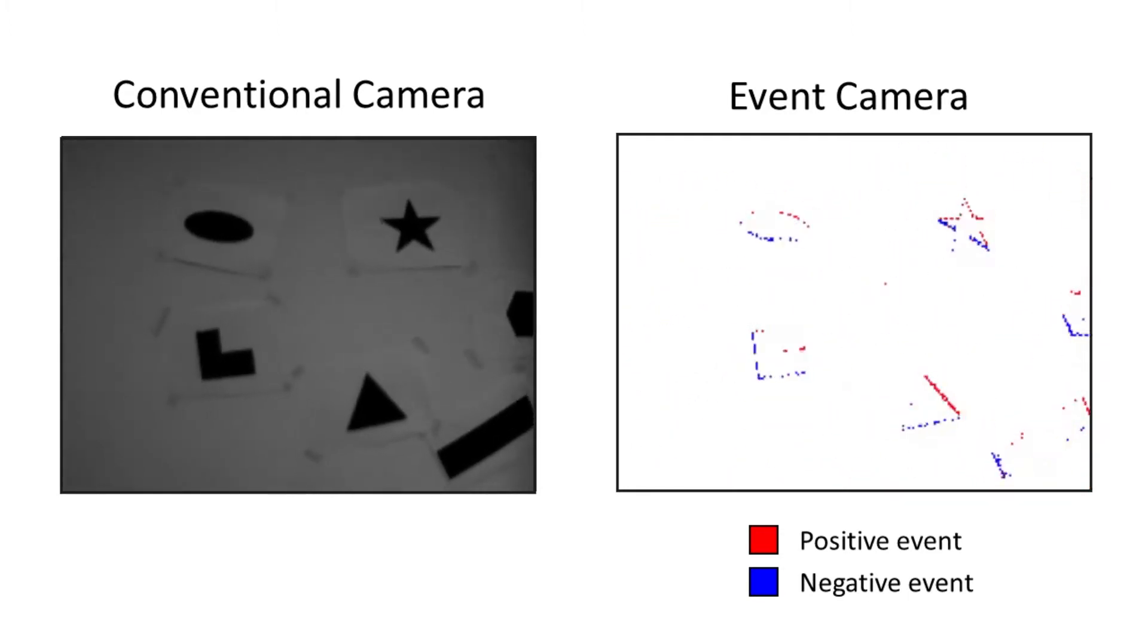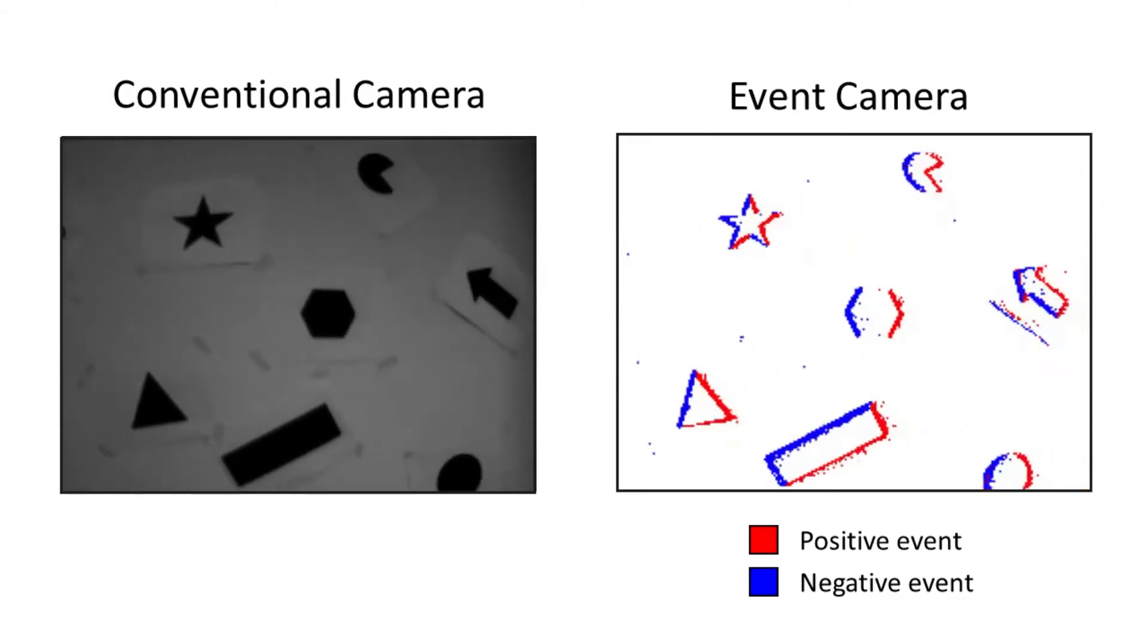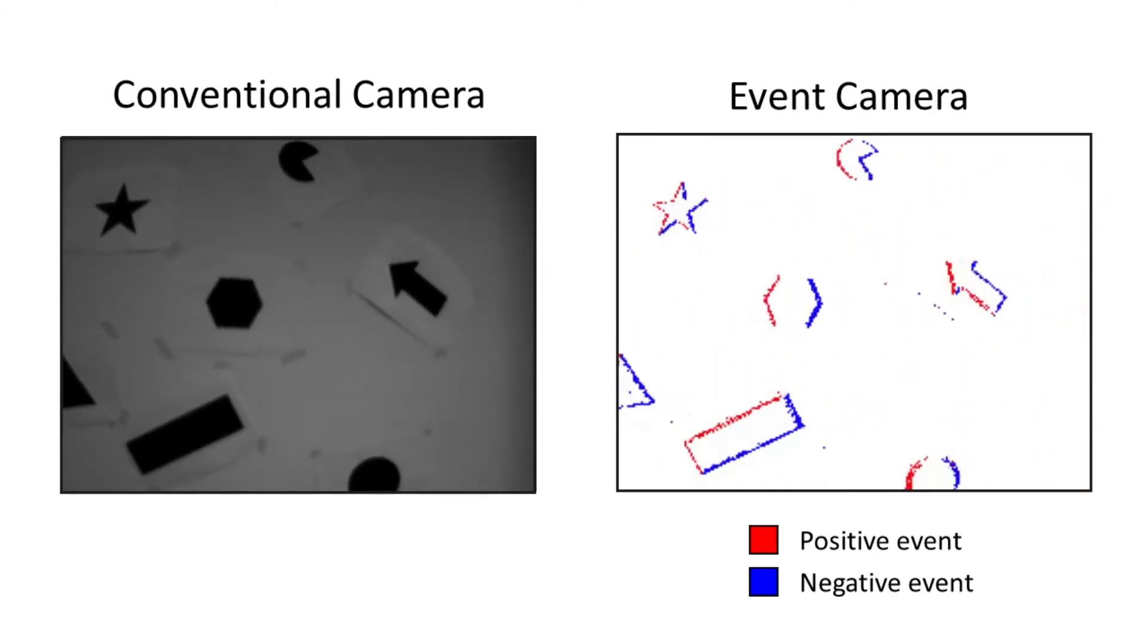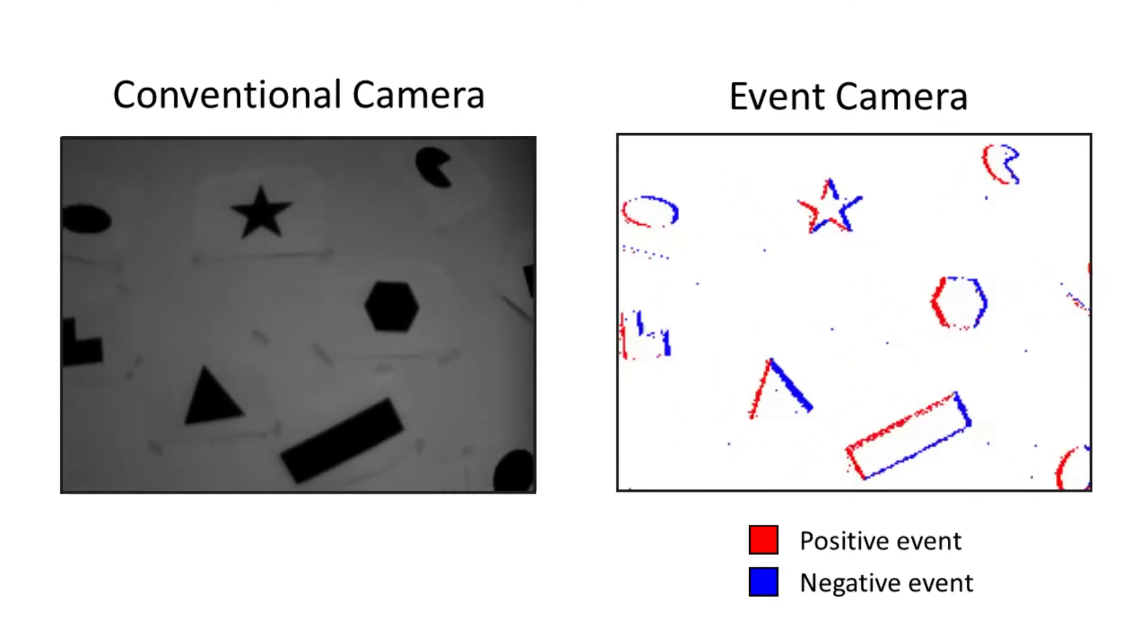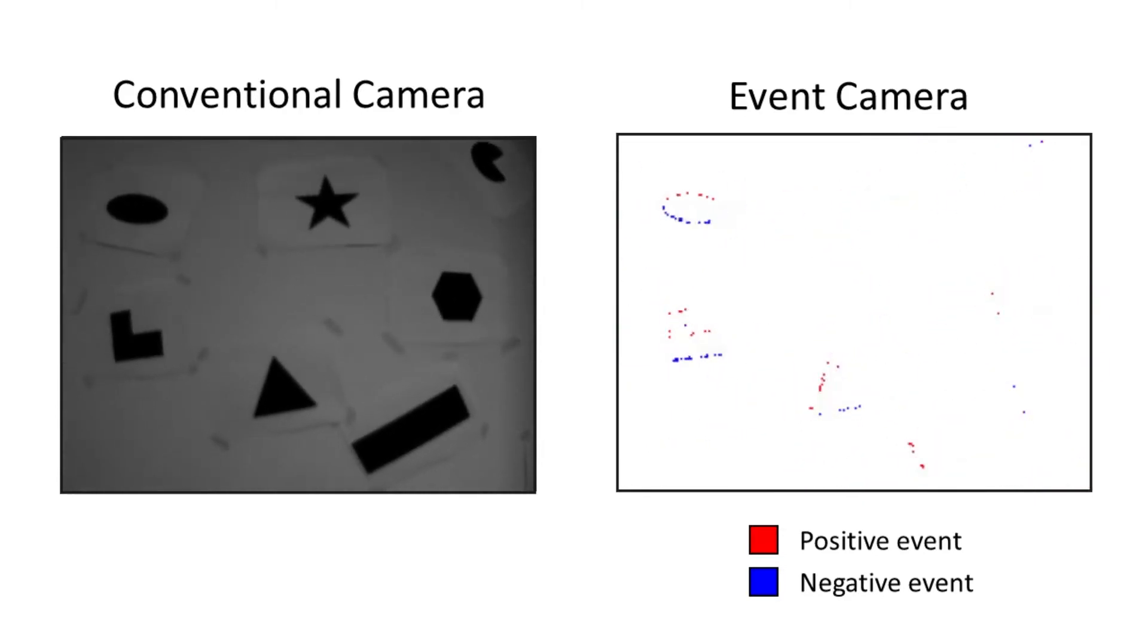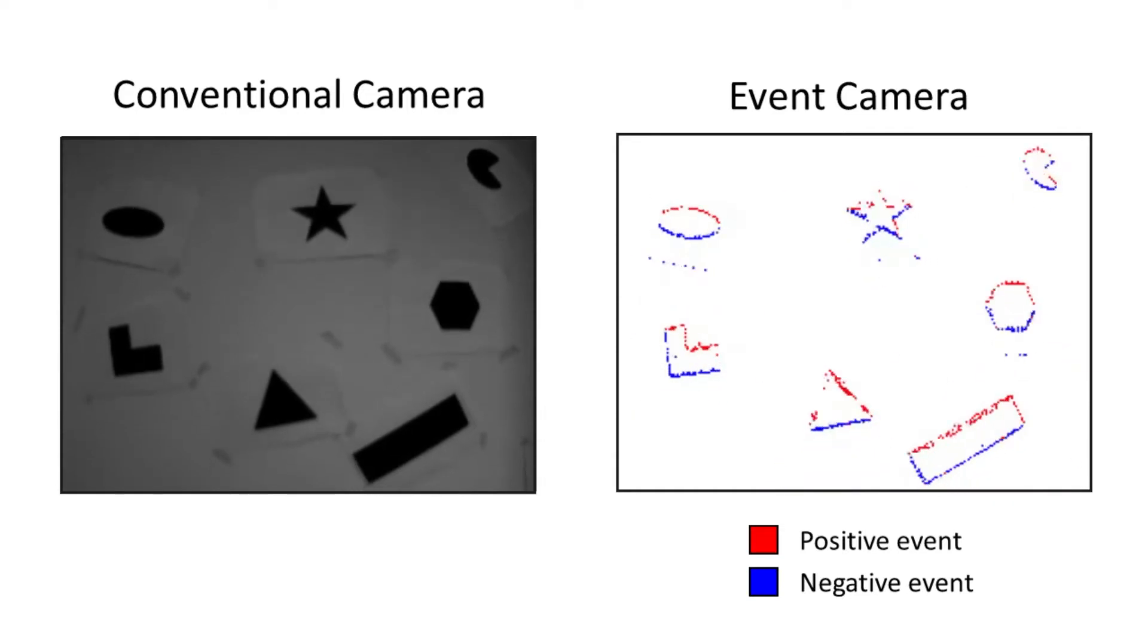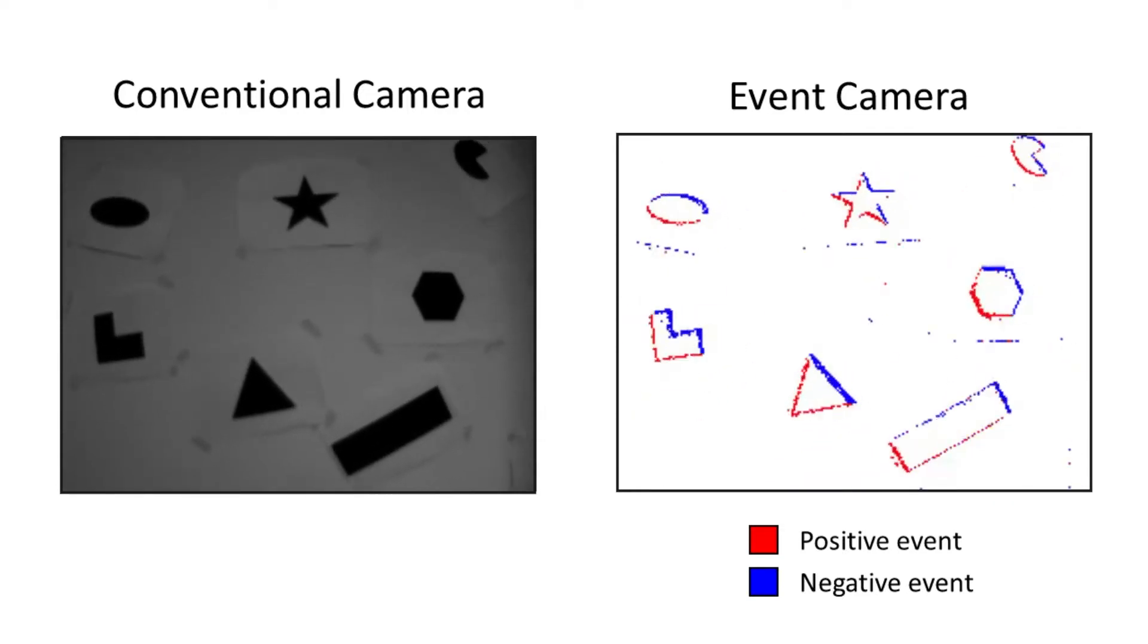In contrast, event cameras react to brightness changes, firing an asynchronous pixel-level event as soon as a change is detected. Events contain the pixel address, microsecond timestamp, and polarity, indicating increase or decrease in brightness.